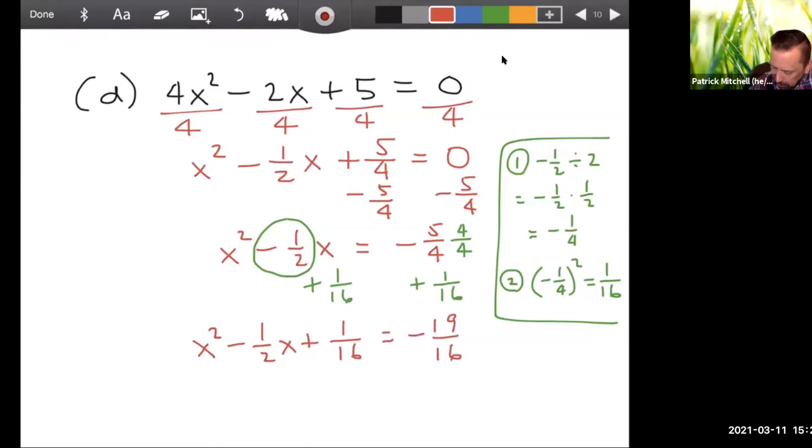Alright. Remember the secret I let you in on in the last problem? How do you write your factored perfect square trinomial? You take the answer to step 1, which in this case is negative 1 fourth. And we're going to drop that right there. So this is going to factor as x minus 1 fourth squared. That's a really good thing to check. Multiply that out and make sure that it gives you that thing back. Don't just take my word for it.